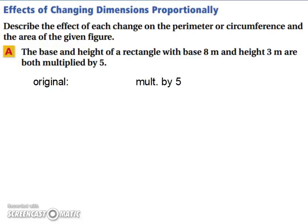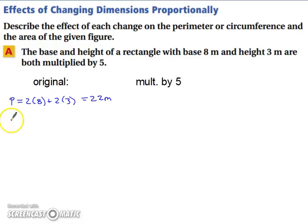Now let's look at effects of changing dimensions proportionally — you're not just going to change one dimension, you're going to change them proportionally. Describe the effect on the perimeter and area of a rectangle with base 8 meters and height 3 meters when both are multiplied by 5. Our original perimeter is 2 times 8 plus 2 times 3, giving us 22 meters. Our original area is 8 times 3, which is 24 meters squared.